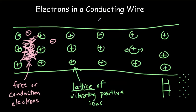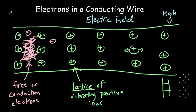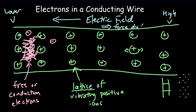Now suppose we have an electric field in the wire. We'd obtain that by having a high voltage on one side of the wire and a lower voltage on the other side, which would create an electric field from high voltage to low voltage. The electrons would then feel an added force in the opposite direction of the electric field because they're negatively charged, so there'd be an overall force on the electrons to the right.